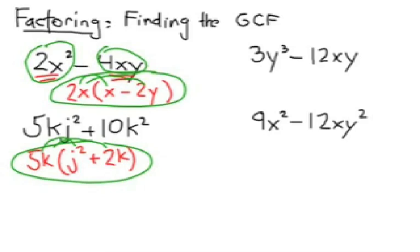Alright, let's take a look. On the outside here, I could factor out a 3 and a y. On the inside, that would be y squared minus 4x. Hopefully you got that.